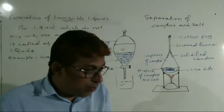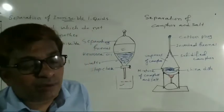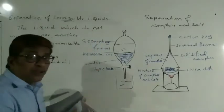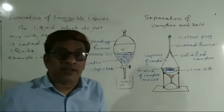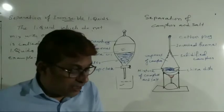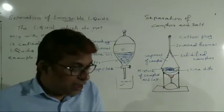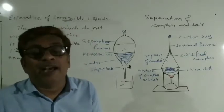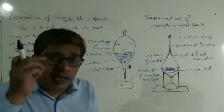The principle is that immiscible liquids have different densities. Because of their different densities — see, water and kerosene oil have different densities — the immiscible liquids separate out in layers depending on their densities.